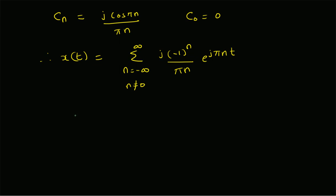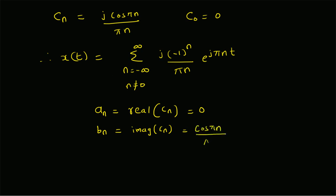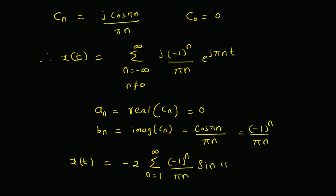For the trigonometric Fourier series expansion, the constant is 0 because of the nature of the signal — it is an odd signal. The cosine coefficients aₙ equal the real part of cₙ, which is 0. The sine coefficients bₙ equal the imaginary part of cₙ, which is cos(πn) divided by π·n, or equivalently (minus 1)ⁿ divided by π·n. Therefore, the trigonometric Fourier series of x of t is minus 2 times the summation n equals 1 to infinity of (minus 1)ⁿ divided by (π·n) times sin(π·n·t).